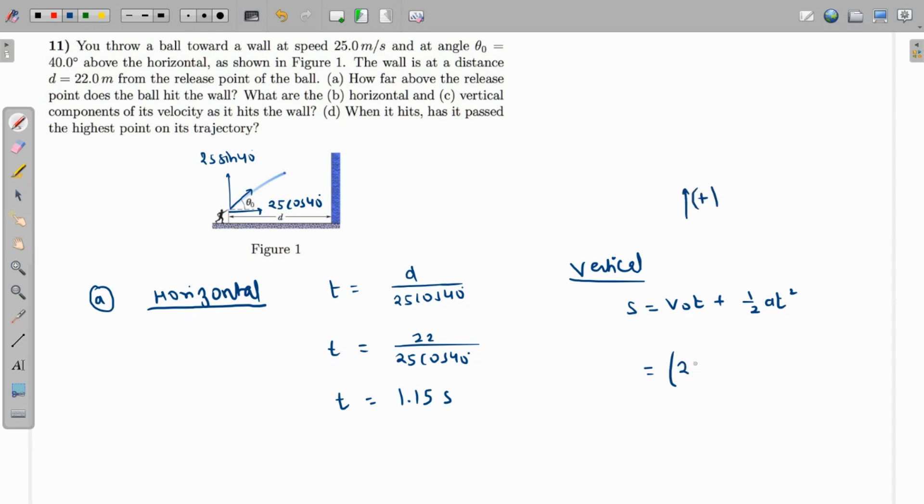so this is coming as 25 sine of 40 times t, which is 1.15, plus half acceleration is minus 9.8 because that's acting down, and t squared is 1.15 whole squared. So let me just try to solve this up: 25 times sine of 40 times 1.15 minus 0.5 times 9.8 times 1.15 squared. So this value is